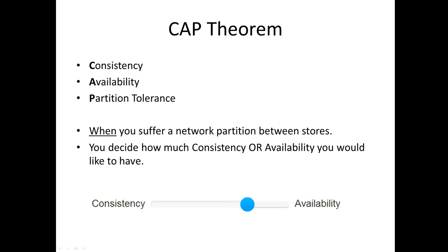When your database has a network component and you suffer a network partition between your data stores, you get to have this slider — you get to decide what your focus is: consistency or availability. It's not either/or, some slider across. And this is not just limited to NoSQL databases, but it's easier to control with NoSQL databases.